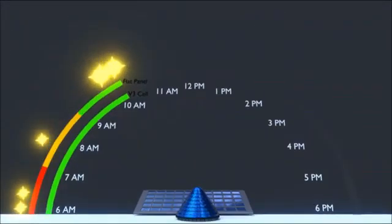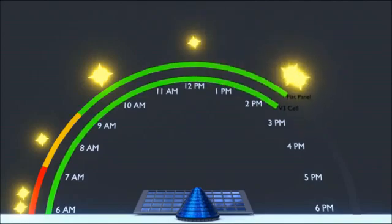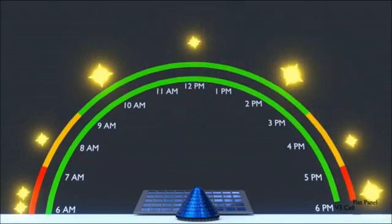V3 Solar's patented design captures more light from every sun angle, every season, with no tracking, by design.